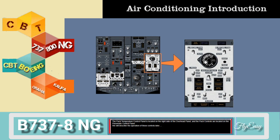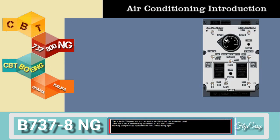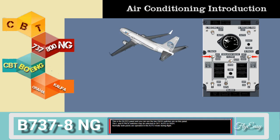This is the bleed panel, and you can see the two pack switches are on this panel. The left and right pack switches may be selected to off, auto, or high. Normally both packs are operated in the auto mode during flight.